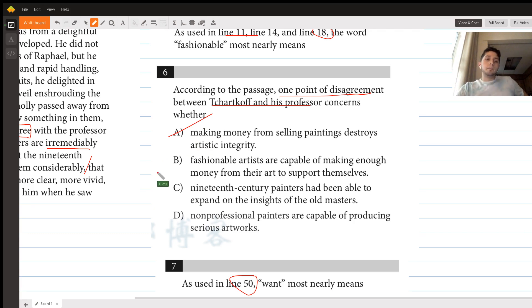B says fashionable artists are capable of making enough money from their art to support themselves. This is actually something that both people would agree with. The professor early on talks about fashionable artists and how they're able to make money, and so does Tcharkoff later on talking about the wealth that they're able to get. So it's not something they would disagree with. Beyond that, we just don't really have a text to support that one.